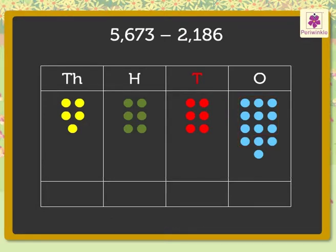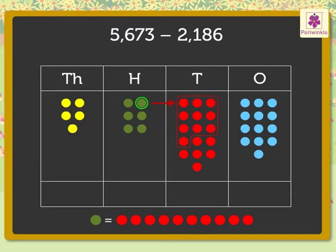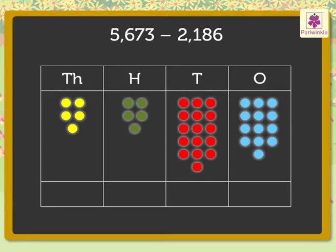Now, in the tens column, there are only 6 red dots left and we need to cancel 8 red dots. We cannot subtract 8 from 6. So, we regroup 1 hundred to 10 tens. So, now we represent 5,673 with dots like this.